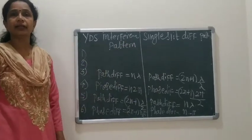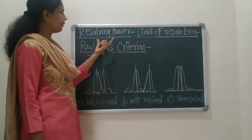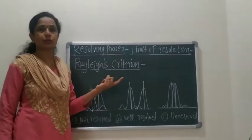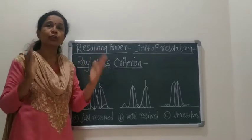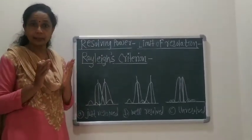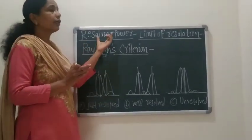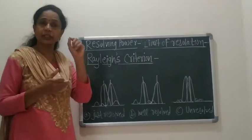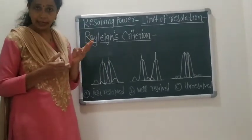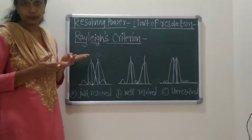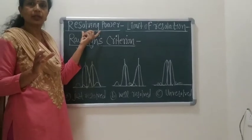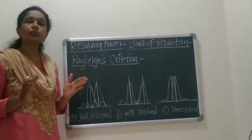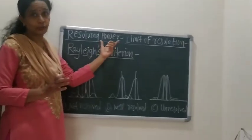Let us discuss Rayleigh's Criteria. First, let us define Resolving Power. Resolving Power is the ability of an optical instrument to separate or resolve small or closely adjacent images. This applies to optical instruments such as the eye, microscope, and telescope.